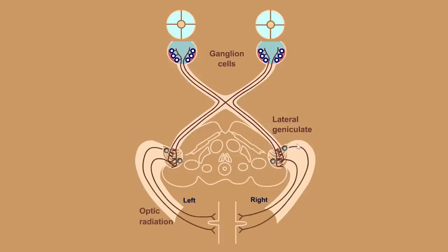From the lateral geniculate nucleus come axons called the optic radiations, similar to the back part of the internal capsule. These axons terminate in the visual cortex — striate cortex — along the calcarine fissure. The upper bank of the calcarine fissure and the lower bank each represent different parts of the visual world. There is a retinotopic projection: the lower part of your visual world is on the upper part, and the upper part of your visual world is on the lower part.